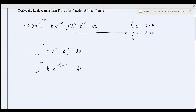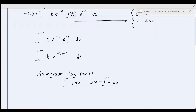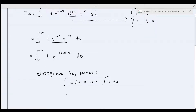To evaluate this integral, we need to use integration by parts. The integral of u dv is equal to u times v minus the integral of v du. So u in this case will equal t, and dv will equal e to the negative a plus s times t.